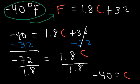This is the one temperature where the Celsius and Fahrenheit values are the same: negative 40 degrees Fahrenheit is equal to negative 40 degrees Celsius.